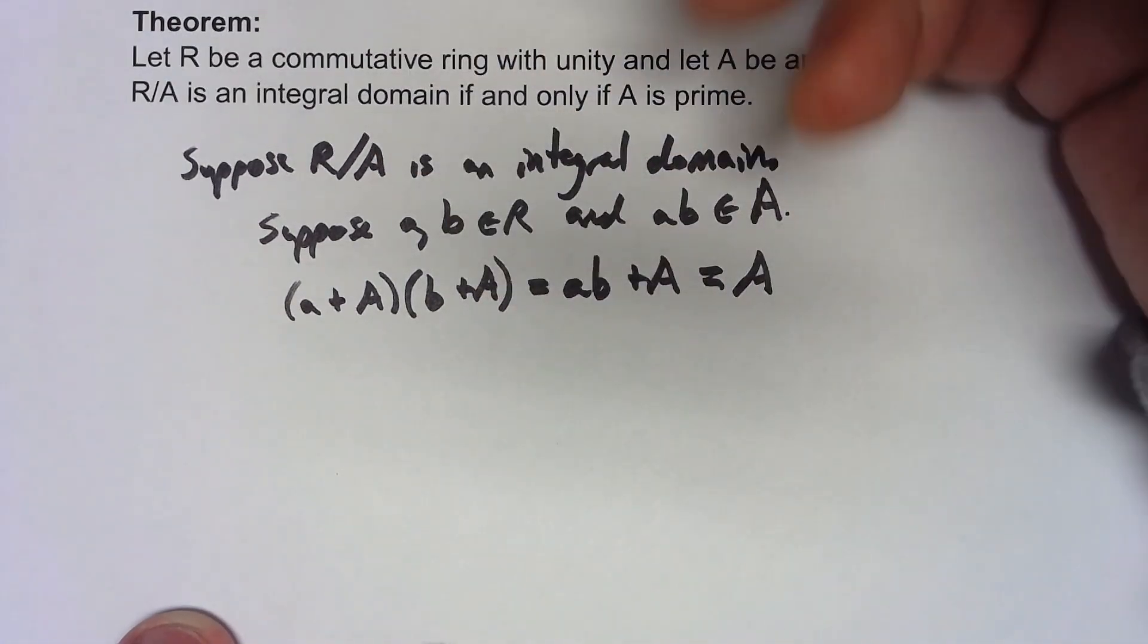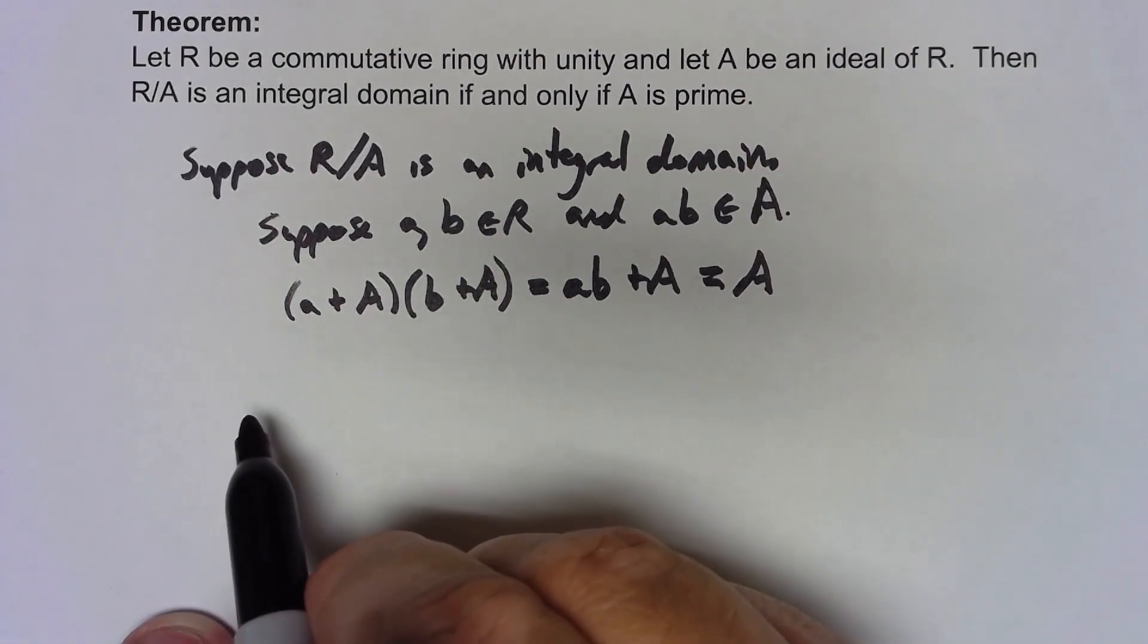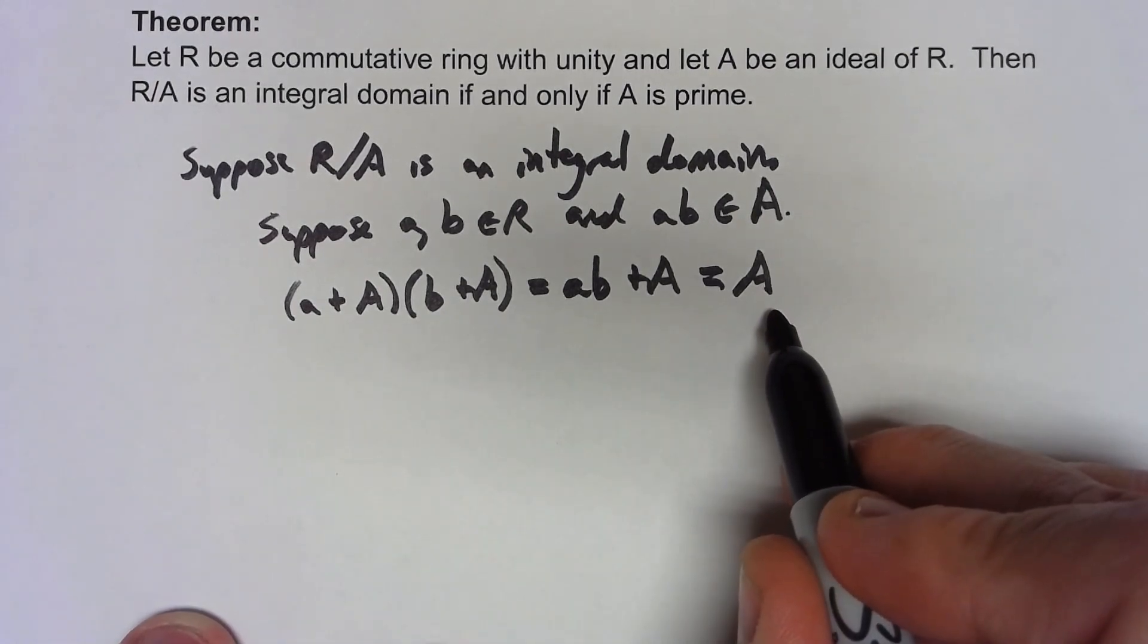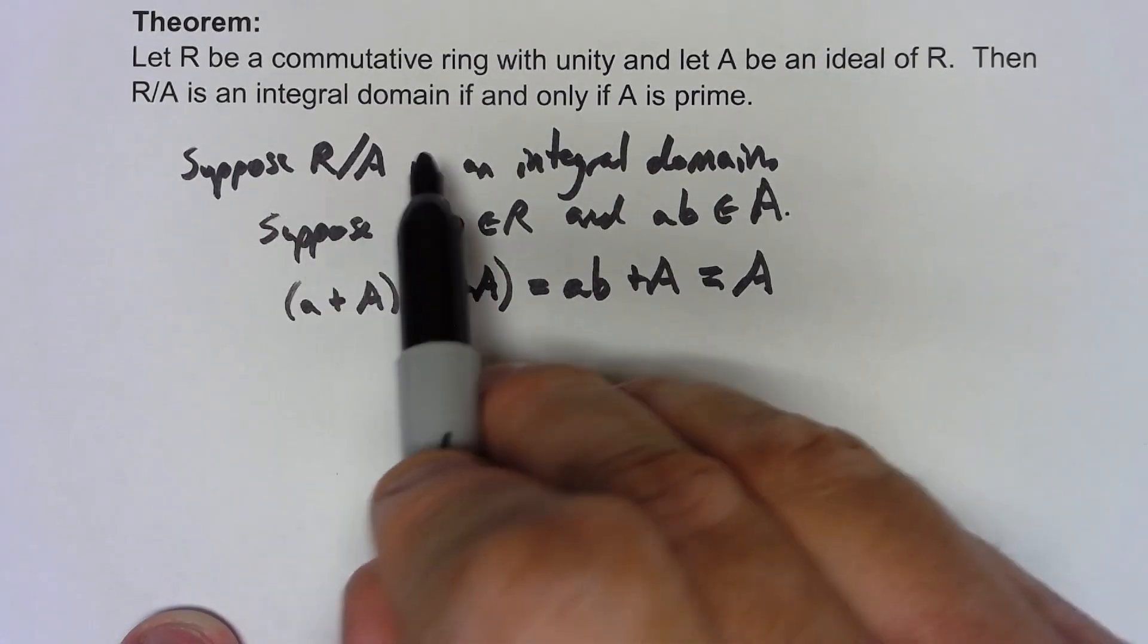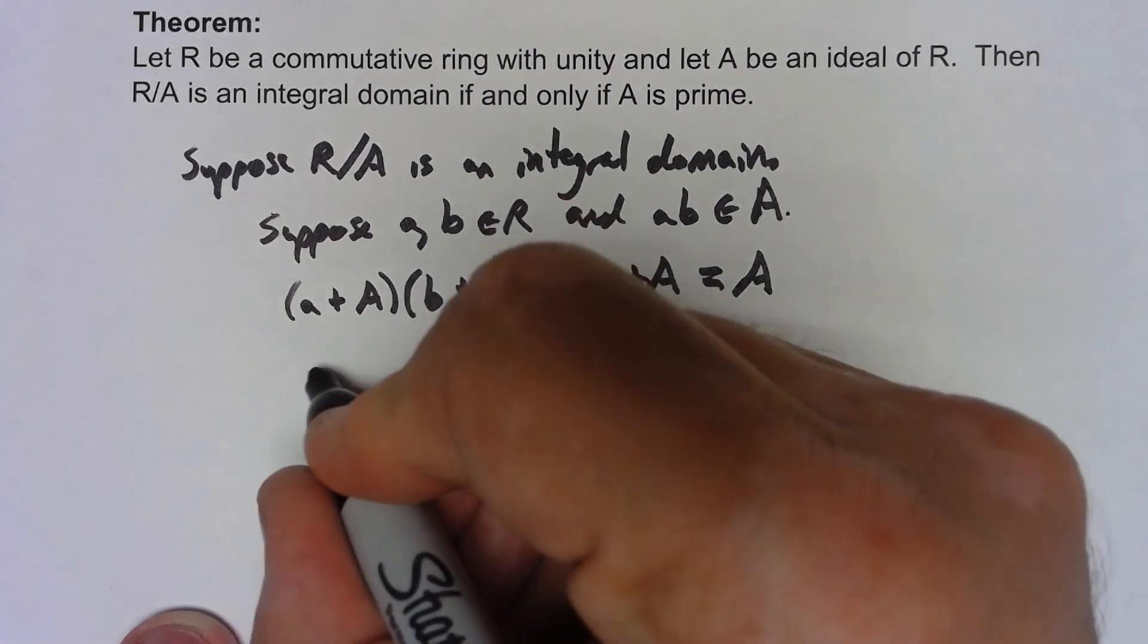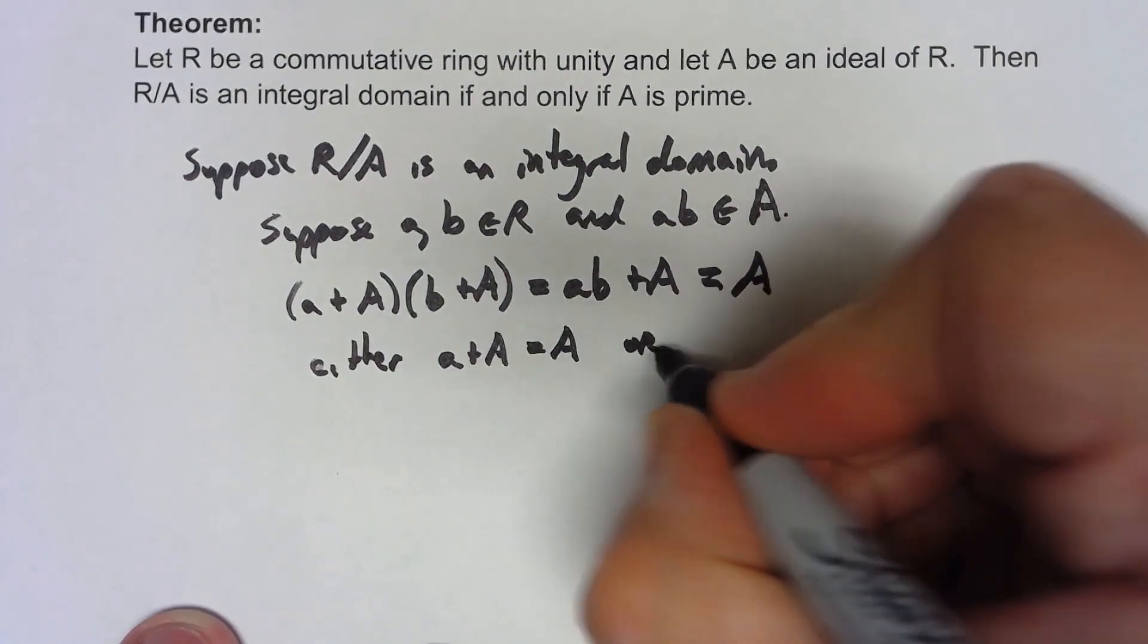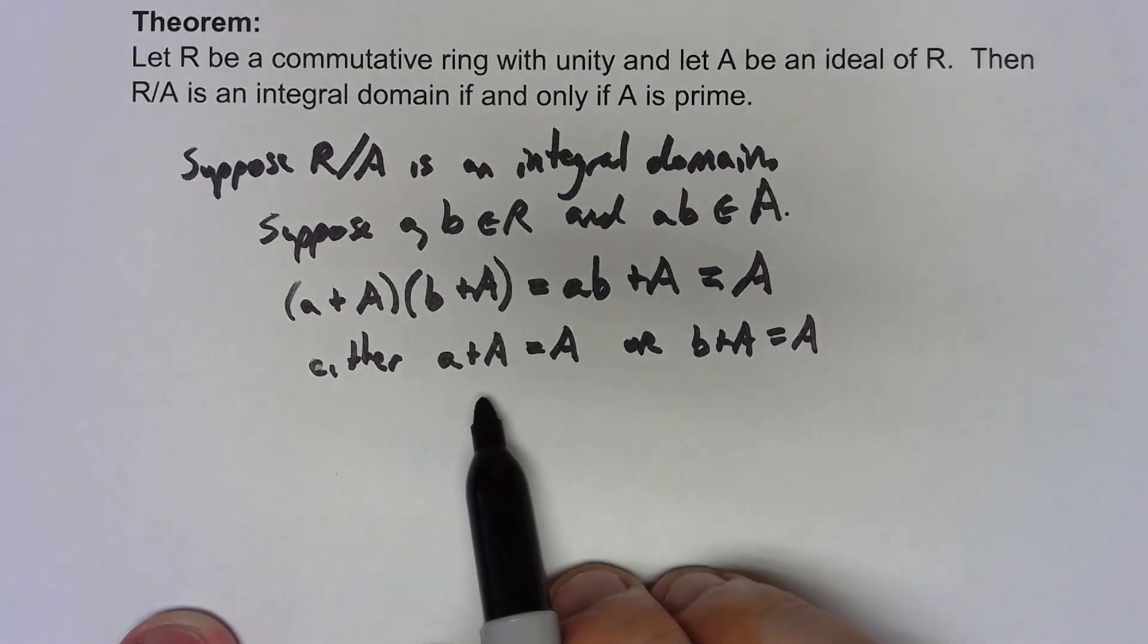Now A is the zero element of that factor ring. Since that's the zero and these are elements of the factor ring, we have two things in there that multiply together to give us the zero element. Since we're assuming this thing is an integral domain, that must mean that we have no zero divisors. So that must mean that either a+A is A or b+A is A. Since we have no zero divisors, one of those things must be the zero element.